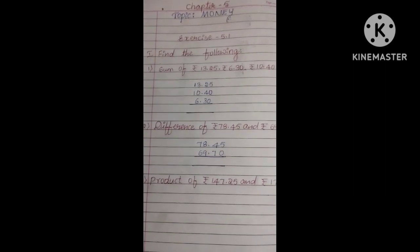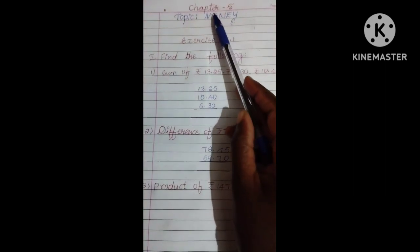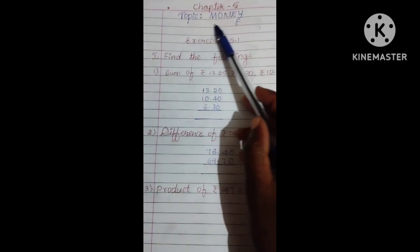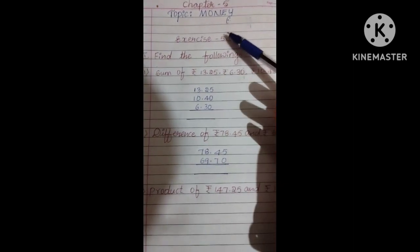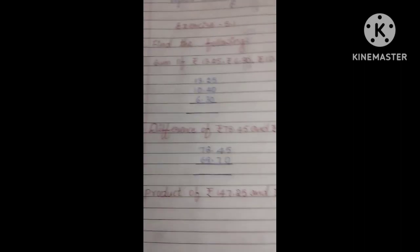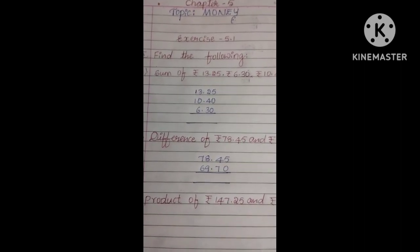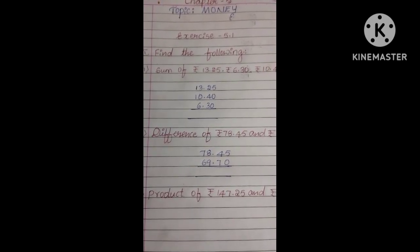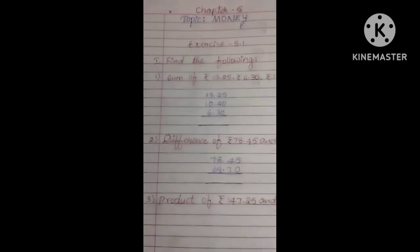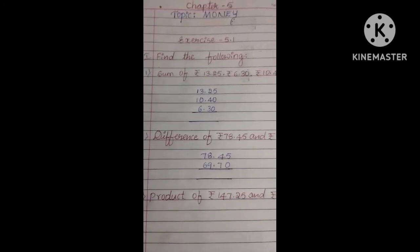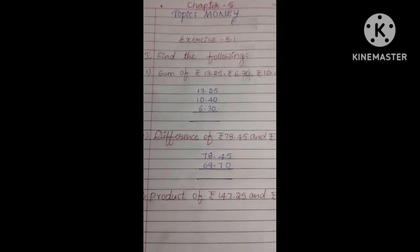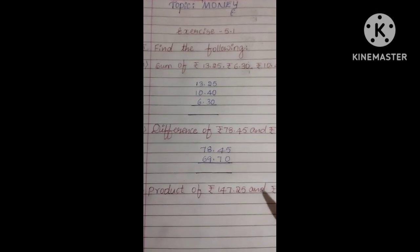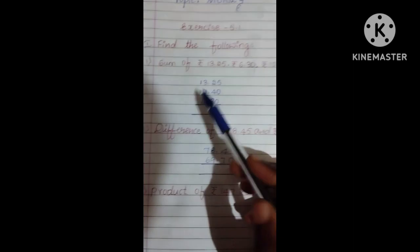This is Chapter No. 5, Topic Money. Already in our previous classes we have learned about 4 operations: Addition, Subtraction, Multiplication and Division. Here also has it is, but we want to add now with money. See here, first question.